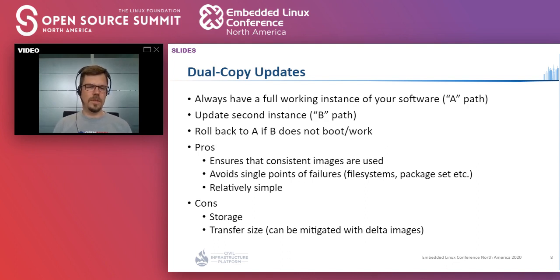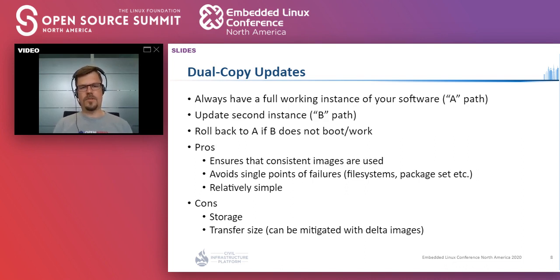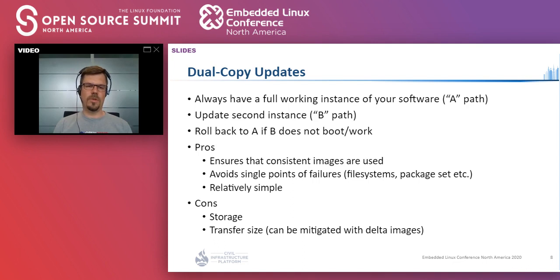This approach comes at a price: you need more storage — possibly twice as much — for the parts you're managing this way, and the update image impacts transfer size. This can be mitigated by delta updates: since you know the A version on your device and want to ship a B version, you compute a delta between both and ship only the delta rather than the full image, which could easily be a few hundred megabytes.